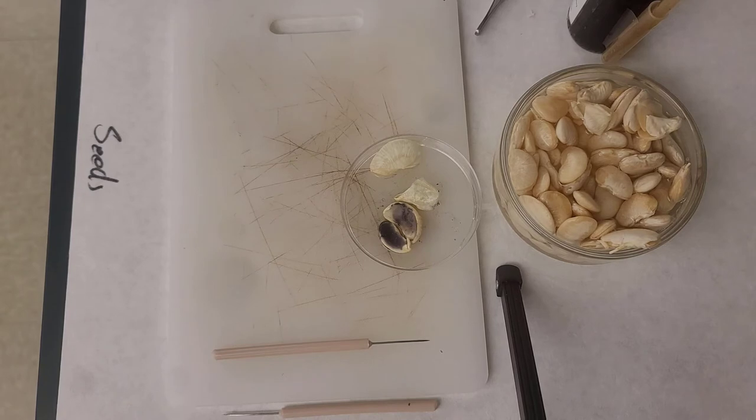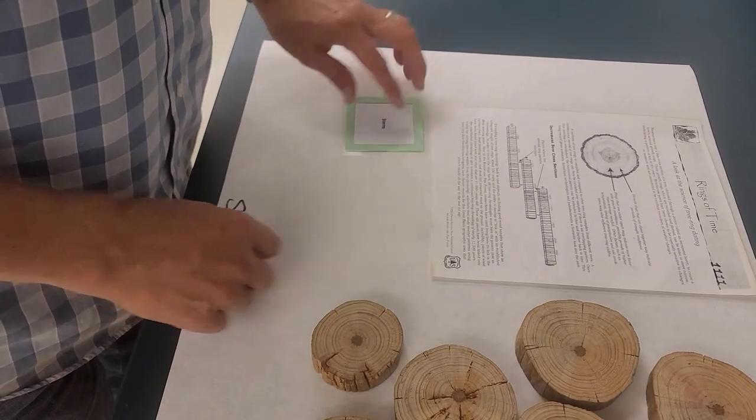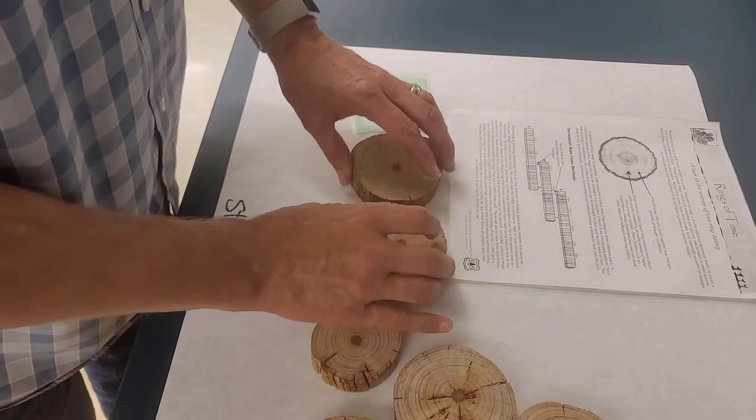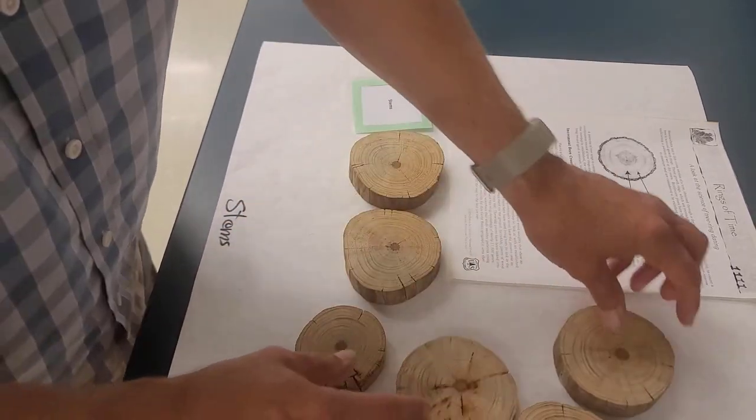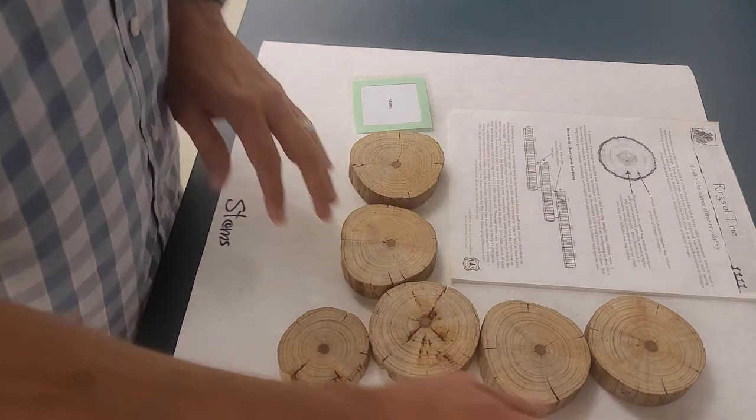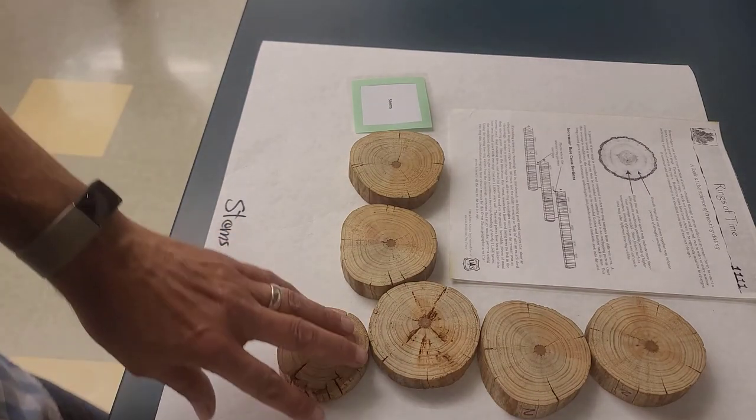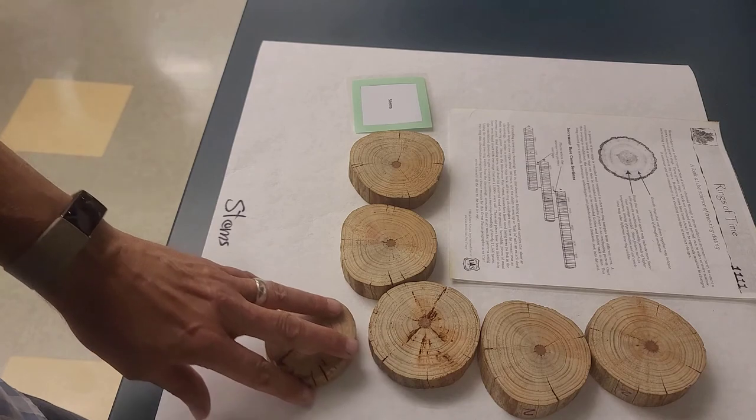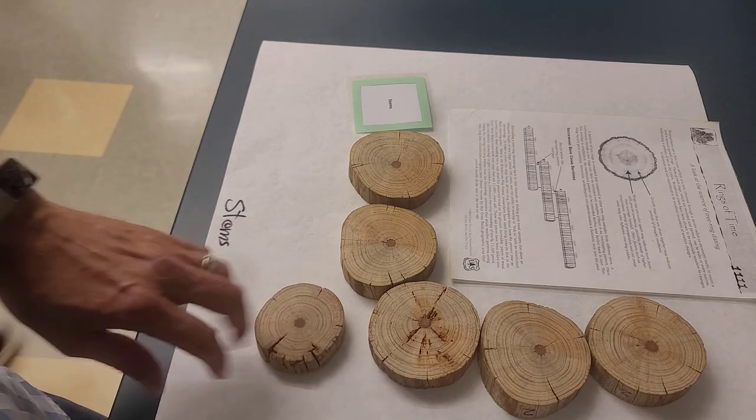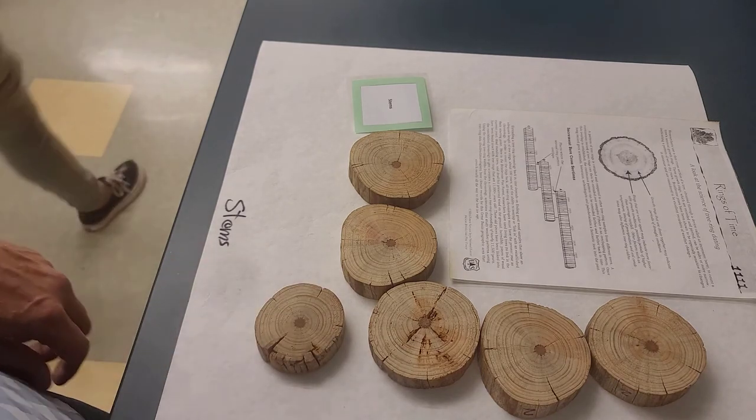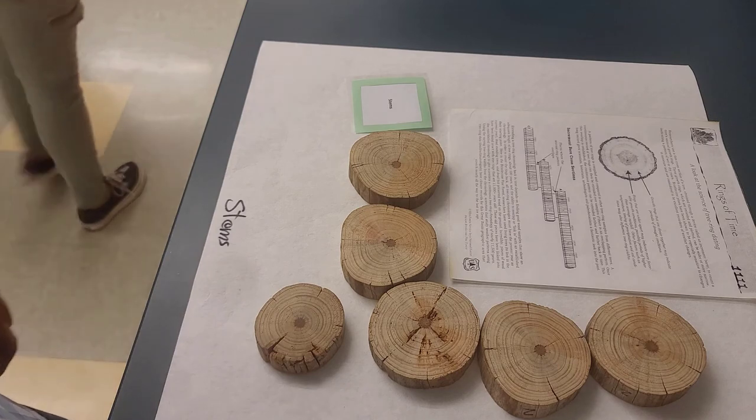Next we're going to have a look at what's called dendrochronology and what this allows us to do is look at tree rings and what's called their secondary xylem, because trees, not all trees but many trees, produce this secondary xylem which allows you to see how old a tree is and also how much rain or lack of rain a tree got in certain years.